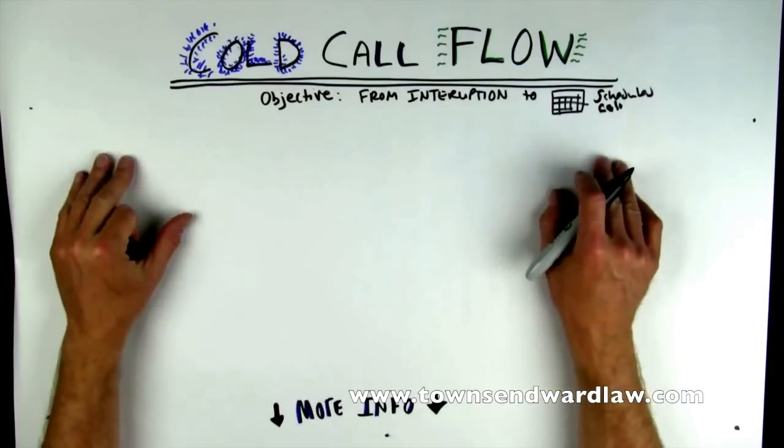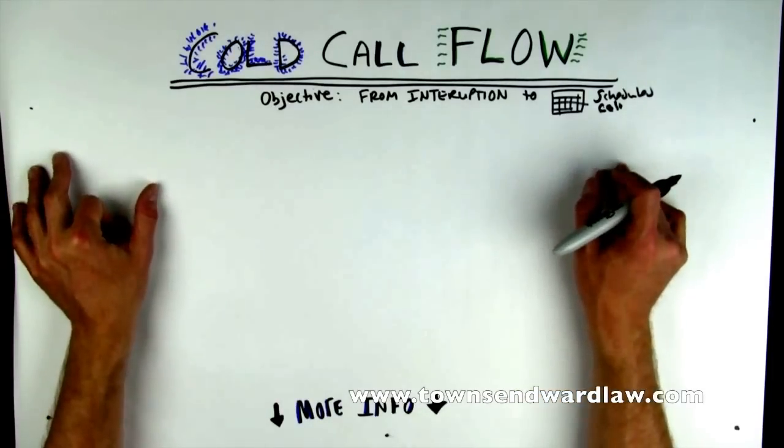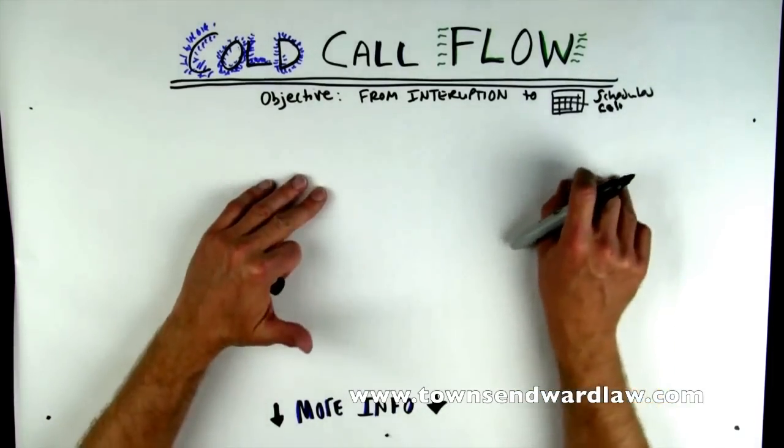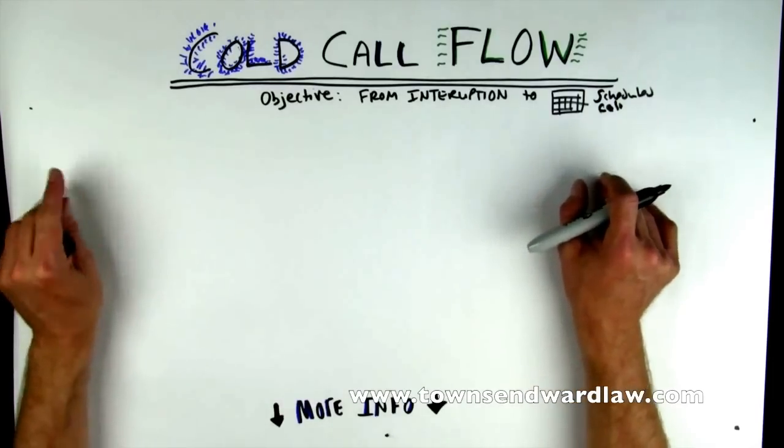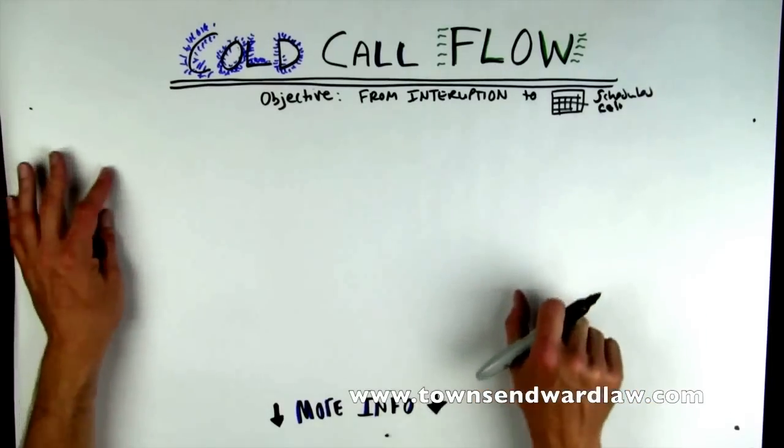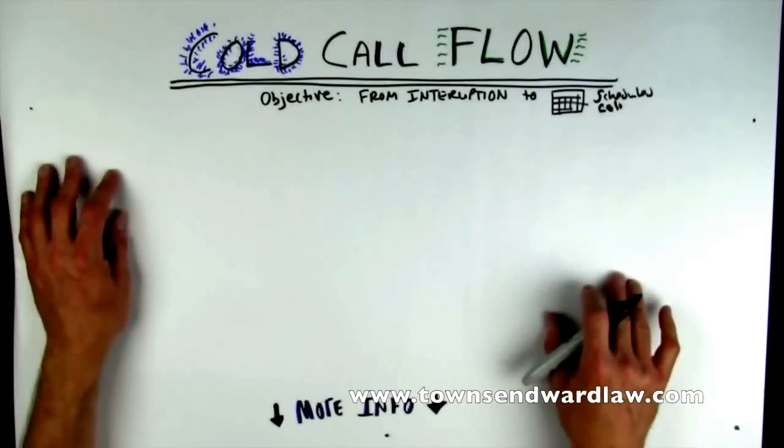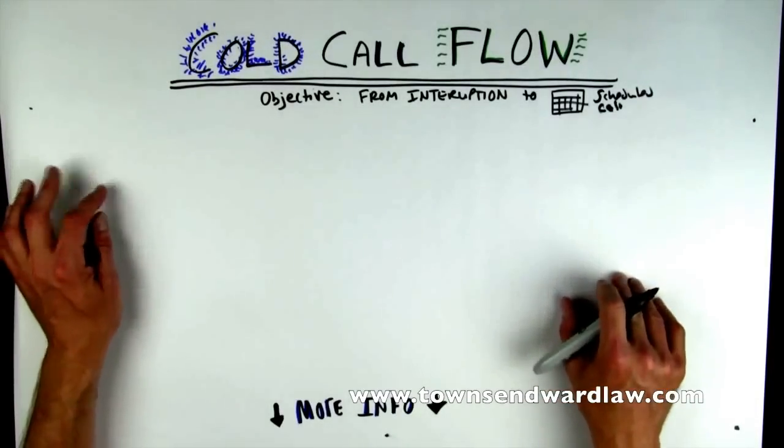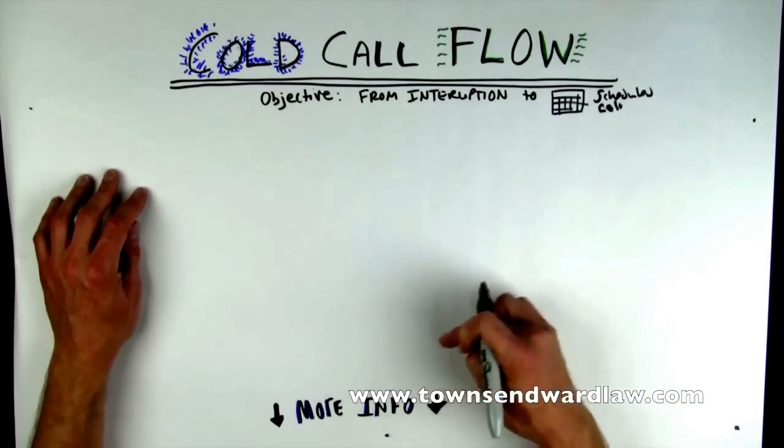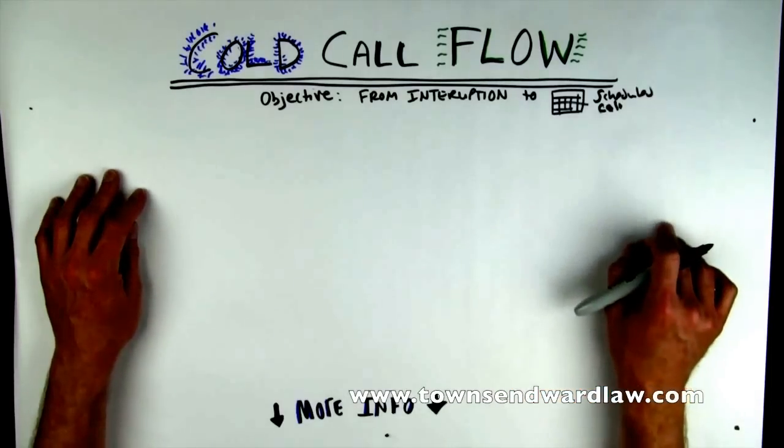I've done lots of writing on cold call scripting and objection handling, but I thought it'd be useful to go through a high-level workflow map, a step-by-step visual format. If you want more details about exactly how this works and the scripting, I'm pretty sure there's a link down here someplace.